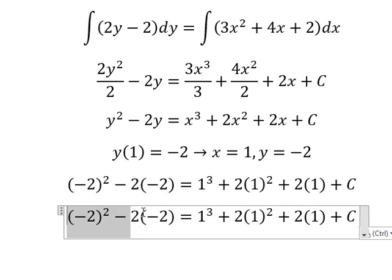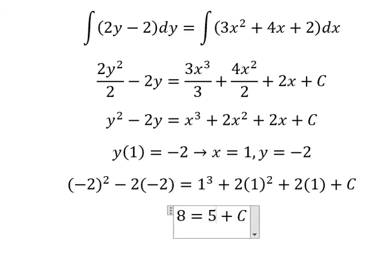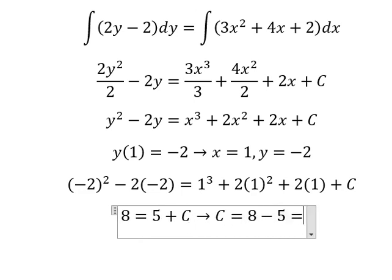So we calculate this one, and we have number 1, and we have number 1, and we have number 8. This one in here we have number 5. So we have C equals to 8 minus number 5, we have number 3.